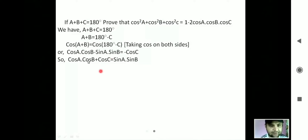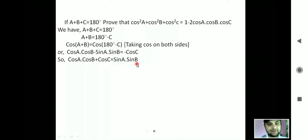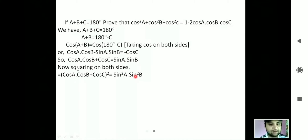Now cos(a)cos(b) is copied as is. The minus cos(c) is brought before the equal sign and made plus cos(c), and sin(a)sin(b) after the equal sign becomes positive. So rearranging the terms we get cos(a)cos(b) + cos(c) = sin(a)sin(b).